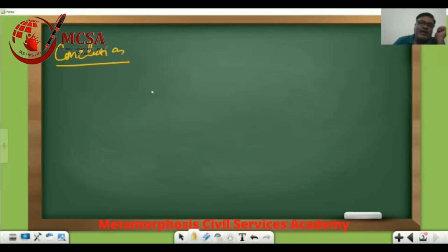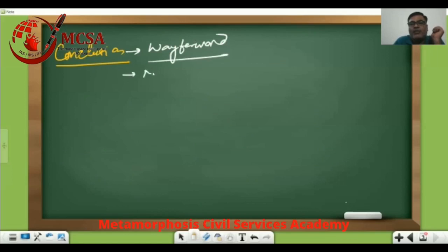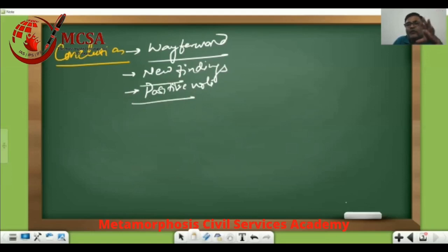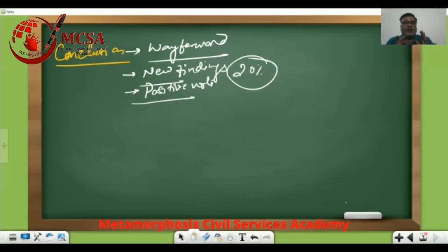So what should be in the conclusion? In conclusion, you can give the way forward. You can talk about new findings related to the topic. You can leave your answer on a positive note. These are the ways you should write. Once again, the word limit should be less than 20% of the word limit the examiner has given you.